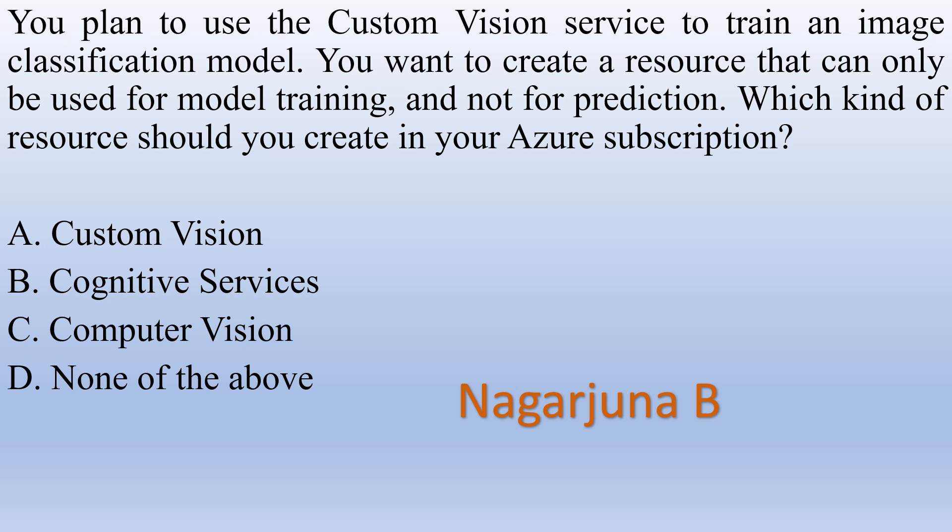You plan to use the Custom Vision service to train an image classification model. You want to create a resource that can only be used for model training and not for prediction. Which kind of resource should you create in your Azure subscription? Option A: Custom Vision. Option B: Cognitive Services. Option C: Computer Vision. Option D: None of the above. The right answer is Custom Vision.